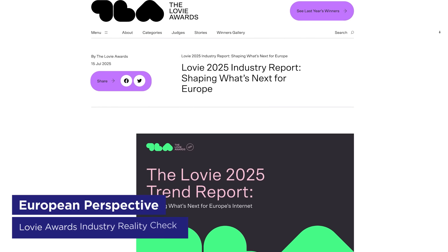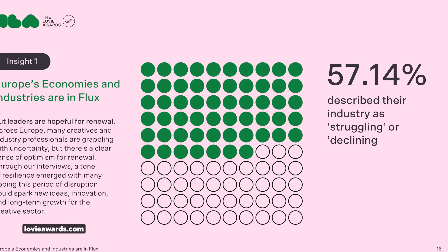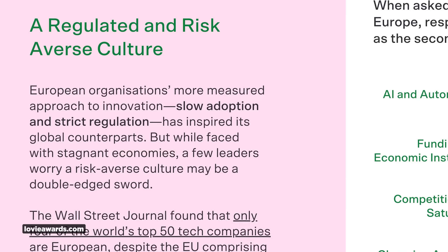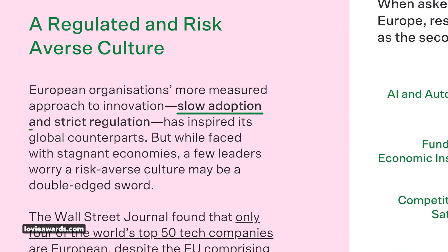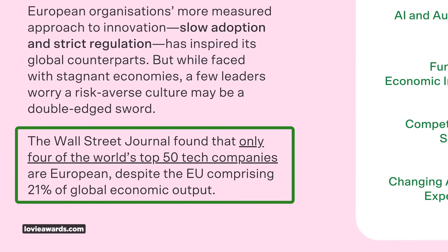The Lovie Awards released their 2025 industry report focusing on Europe, and it's always interesting to get perspectives beyond our US-based bubble. The findings were kind of a downer — 57% of respondents said the industry is struggling or in decline. One key insight was how different Europe's approach is compared to America: we're very unregulated with a lot of risk-taking, while European organizations are more measured with innovation and slower adoption with stricter regulation. The Wall Street Journal found that only four of the world's top 50 tech companies are European — that gap is pretty telling.